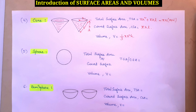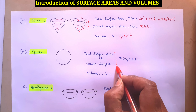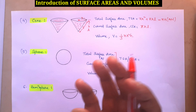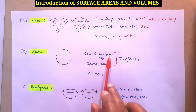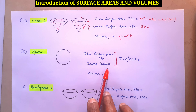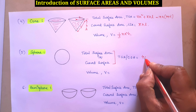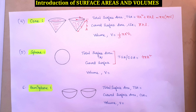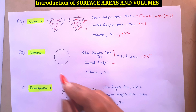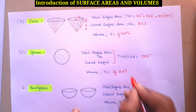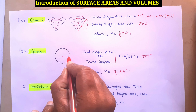Next is sphere. Sphere is like a circle but it is a solid 3D figure. In a sphere, both total surface area and curved surface area are equal, because there is no top and bottom — it is entirely round. So total surface area = curved surface area = 4πR². Volume of a sphere is (4/3)πR³, where R is the radius.